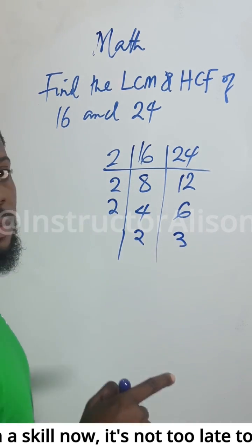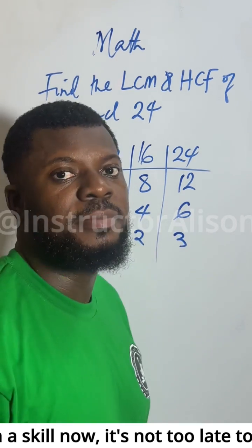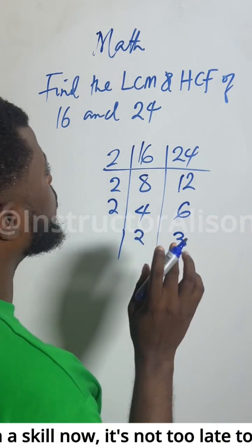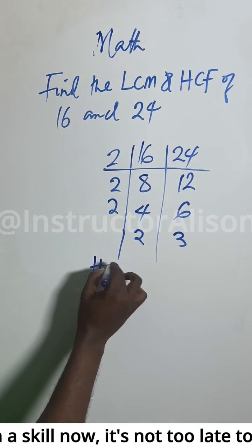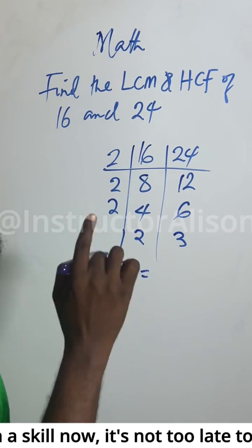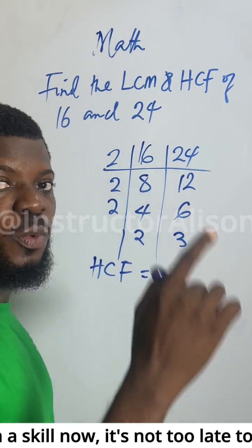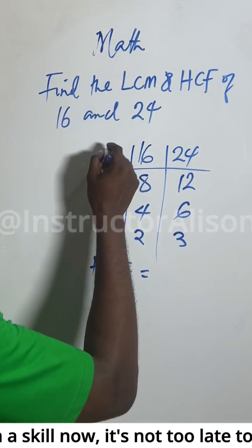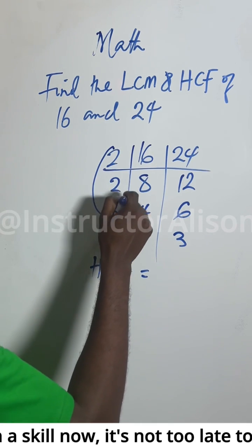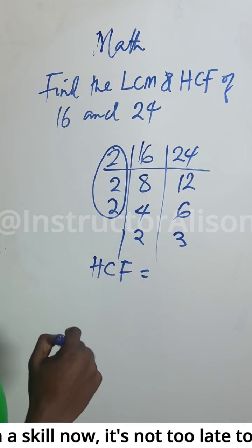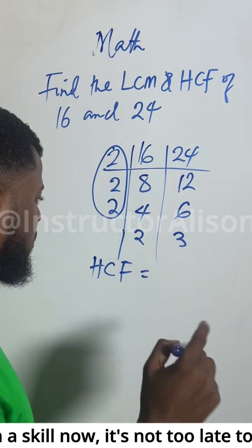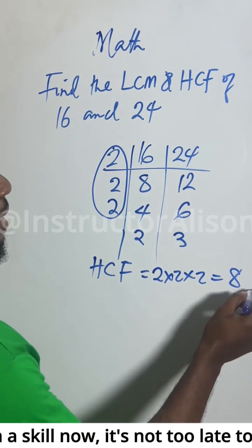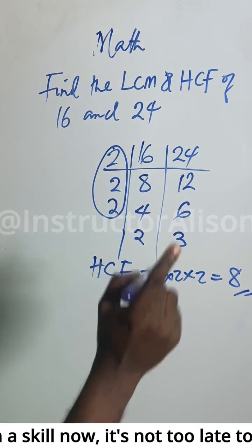Now two can't go into 1 and 3 at the same time, so we stop. That gives us the HCF — the Highest Common Factor. We multiply the factors we divided by first: two times two times two, and that gives us the HCF.